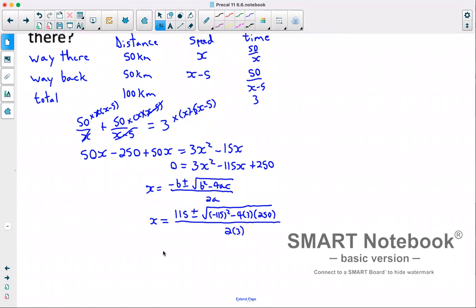Going through and simplifying this gives us x equals 115 plus or minus the square root of 10,225, divided by 6. We'll then go through and find both of our answers to this, punch in our calculator, and we got 36 as well as 2.33.